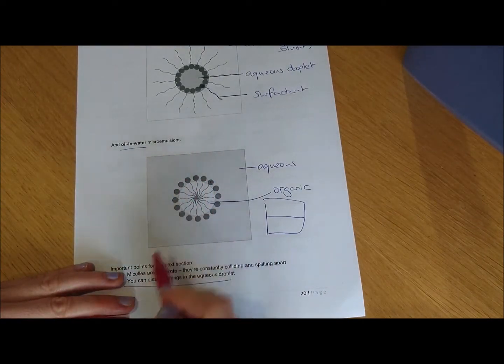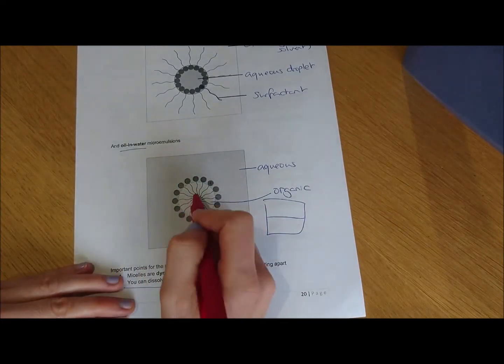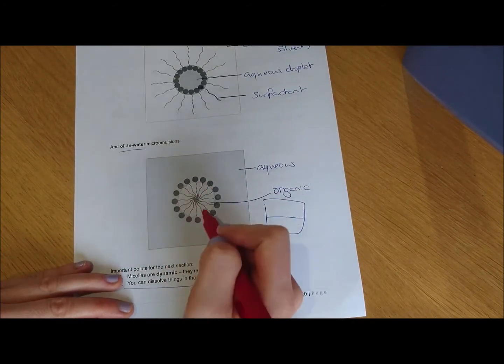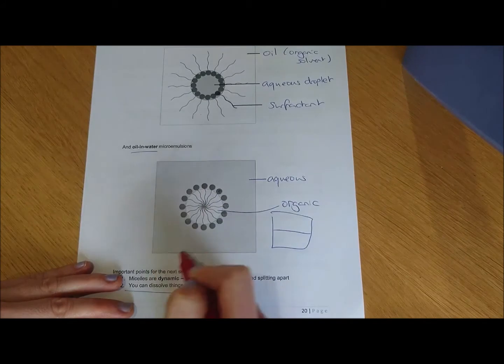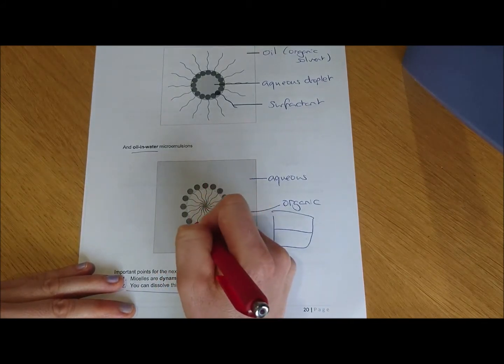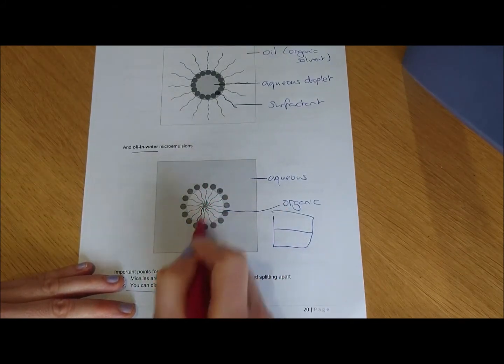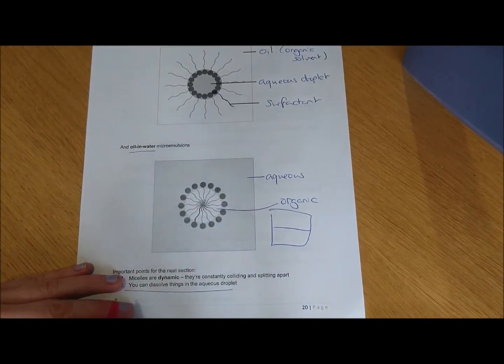The surfactant molecules again are stabilizing that droplet. In this case, because the aqueous phase is on the outside, you've got your polar head groups around the edge poking out into the aqueous phase, and your non-polar tails, they're the ones sticking into the oil droplet.